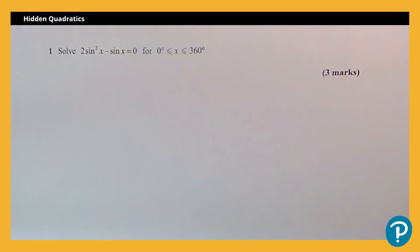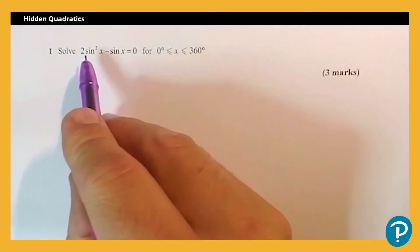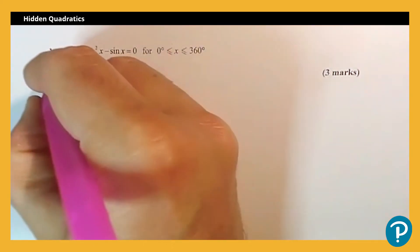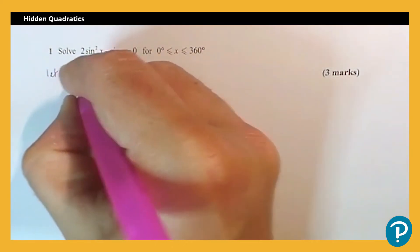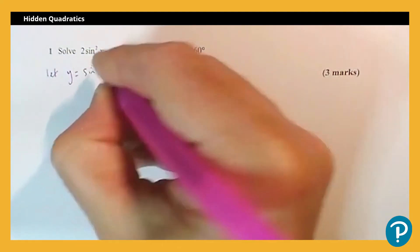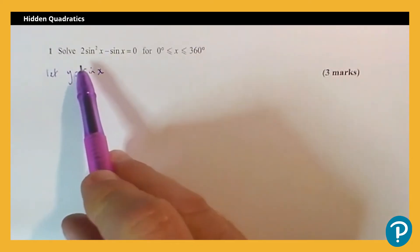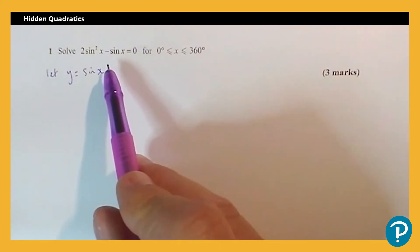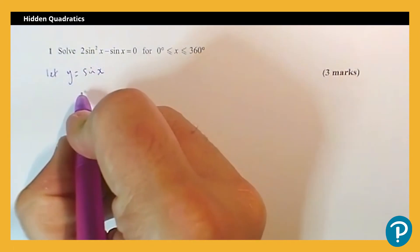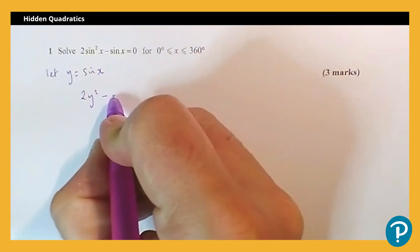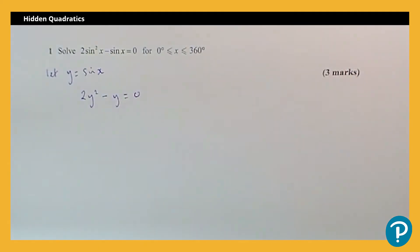In the range 0 degrees to 360 degrees. So the first thing we need to do here is recognize what we're going to use for our substitution. So what I'm going to do is let y equals sinx. Now once I've done that, I can then substitute for sinx equals y into the equation we've been given, and that will leave me with 2y² - y = 0.